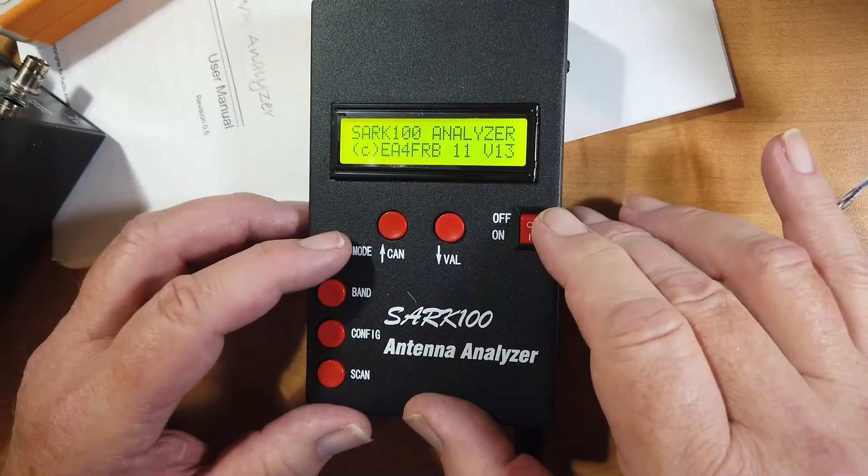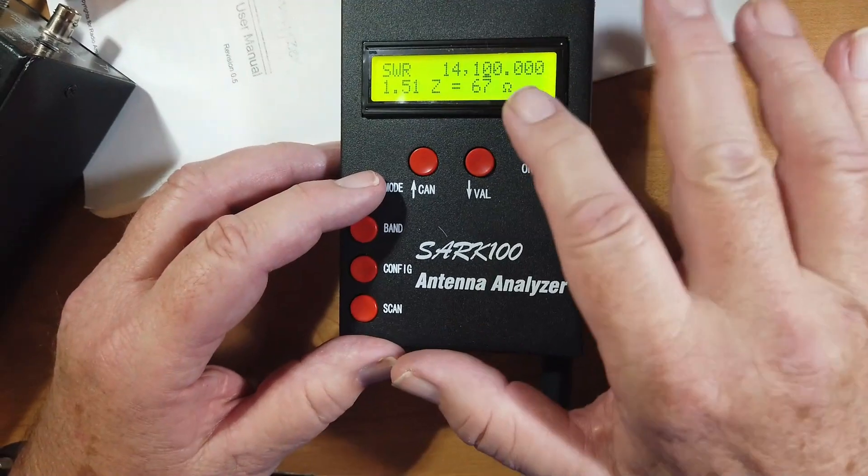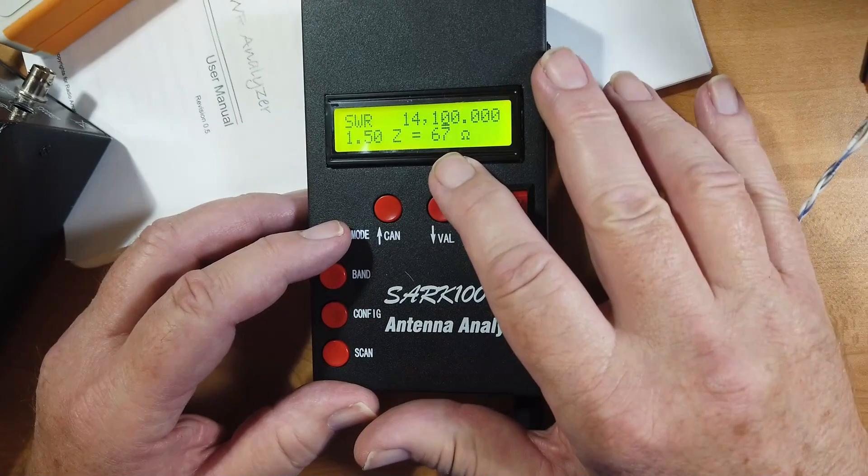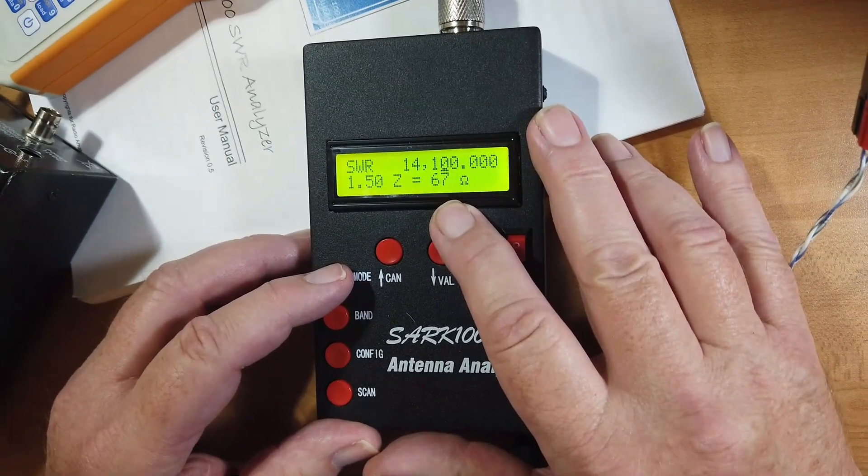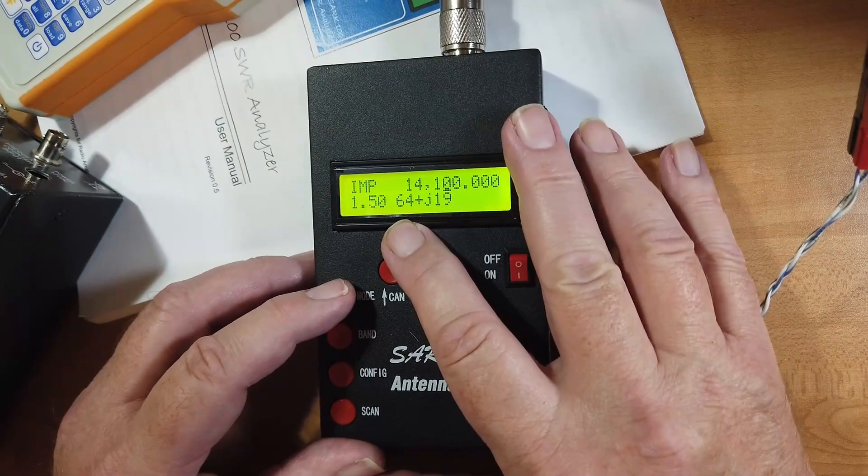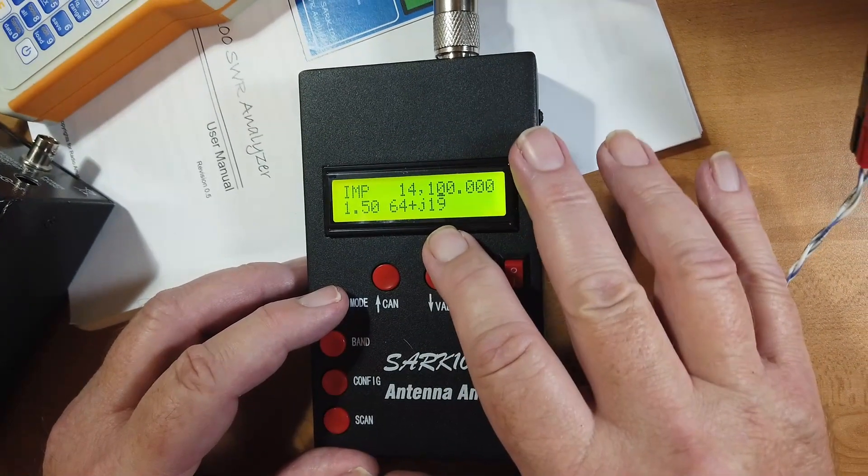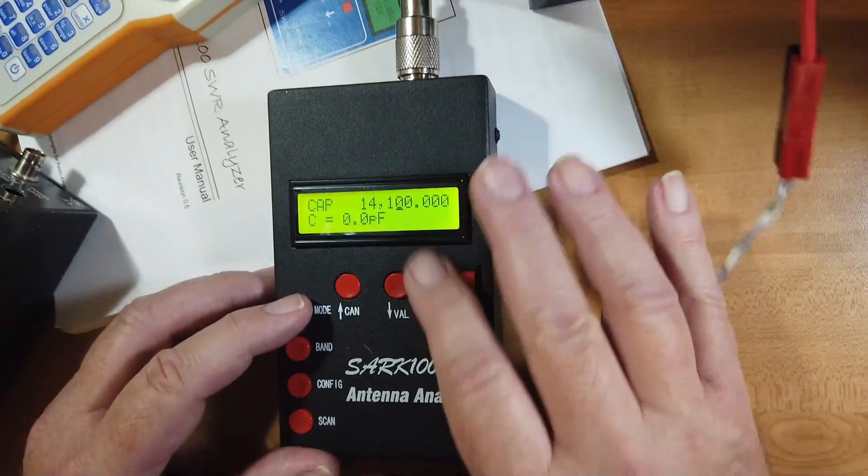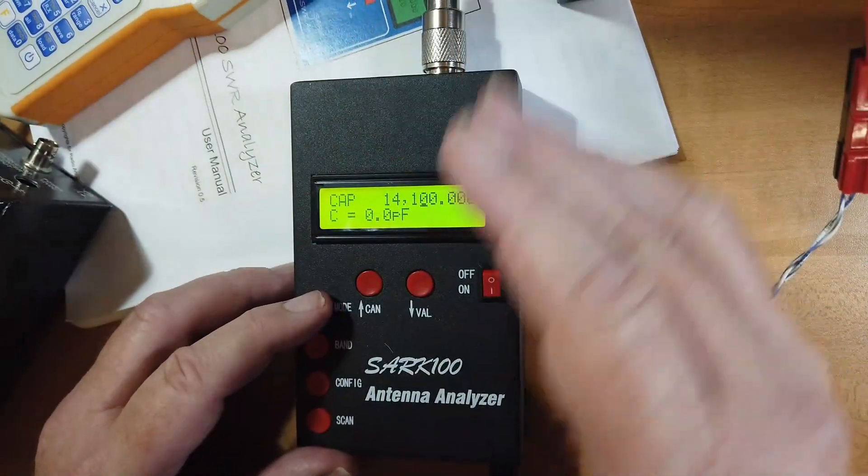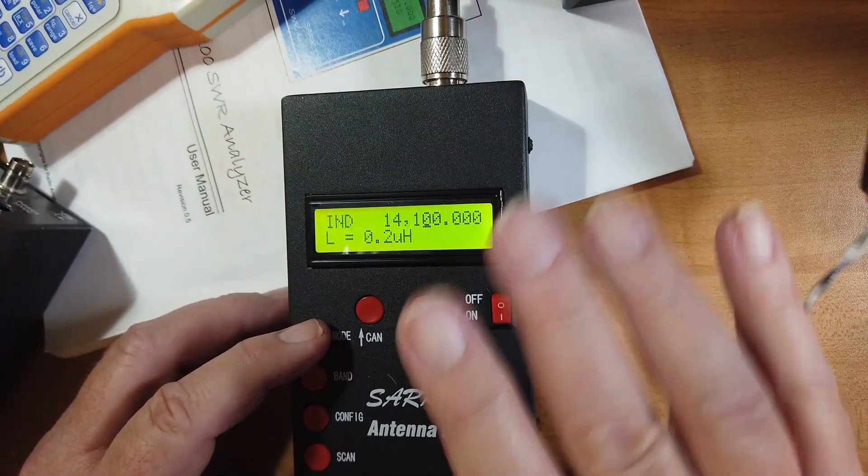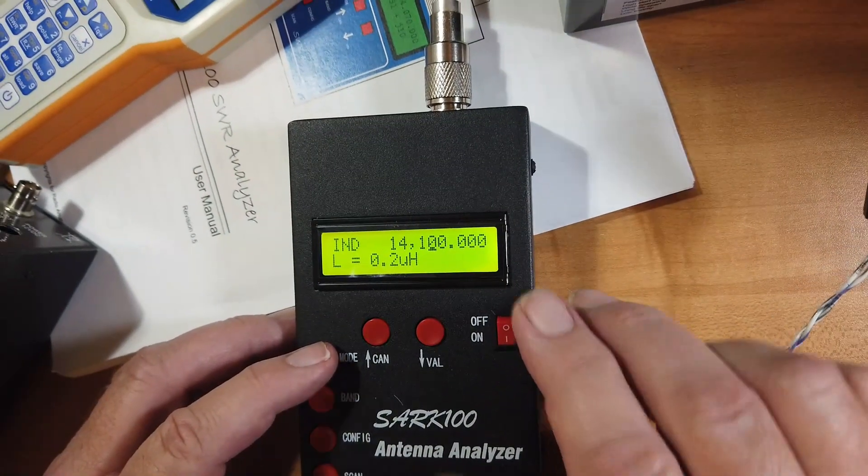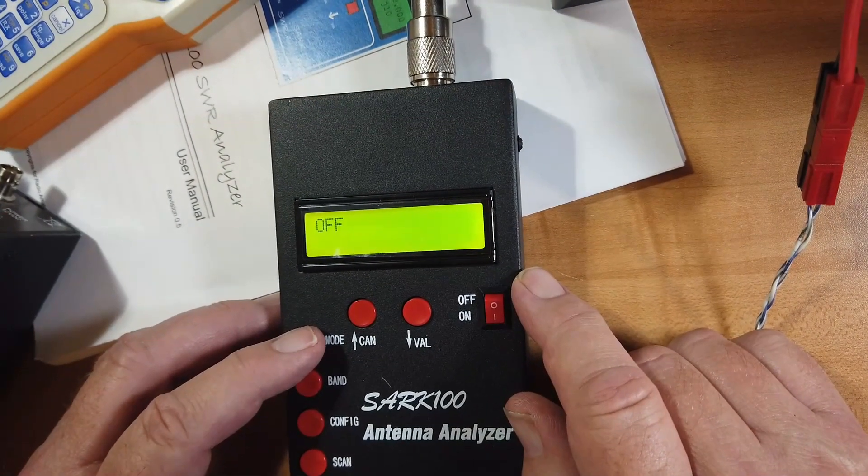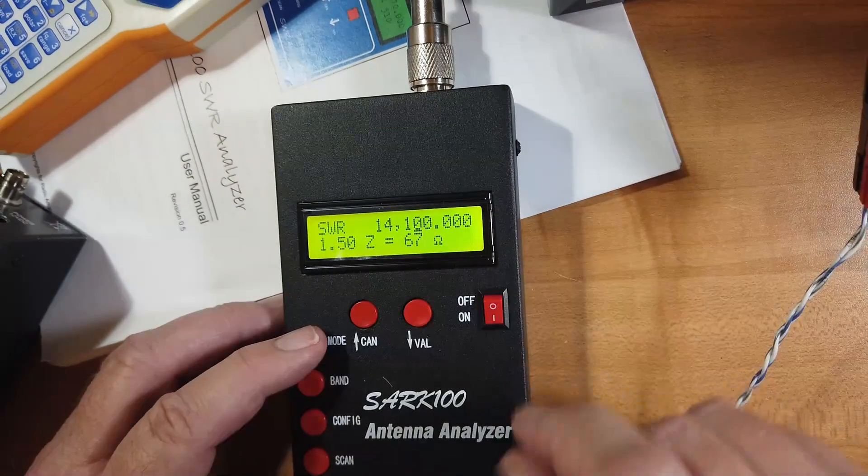We've got different modes. SWR 1.5 with the magnitude of the impedance being 67 ohms. Or, we can look at the 64 ohms plus J19 to get the impedance. We can look at the capacitance that it's viewing. And it's none because it's into an antenna. And the same with the Henry's. It's very low. But you can actually measure capacitance and inductance across there.